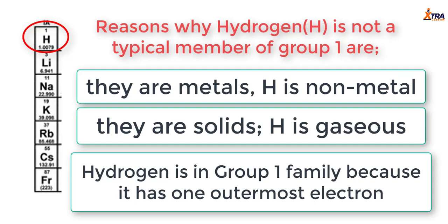I would argue that hydrogen can fit into three groups of the periodic table. Number one is group 1, because it has one outermost electron. Hydrogen can also fit into group 4, because group 4 members have partially filled outermost electrons — they have four outermost electrons and need eight, giving them just half-filled outermost electrons. The same applies to hydrogen: its first shell should contain two electrons maximally, but hydrogen has one, meaning it has just half the original amount it should have.